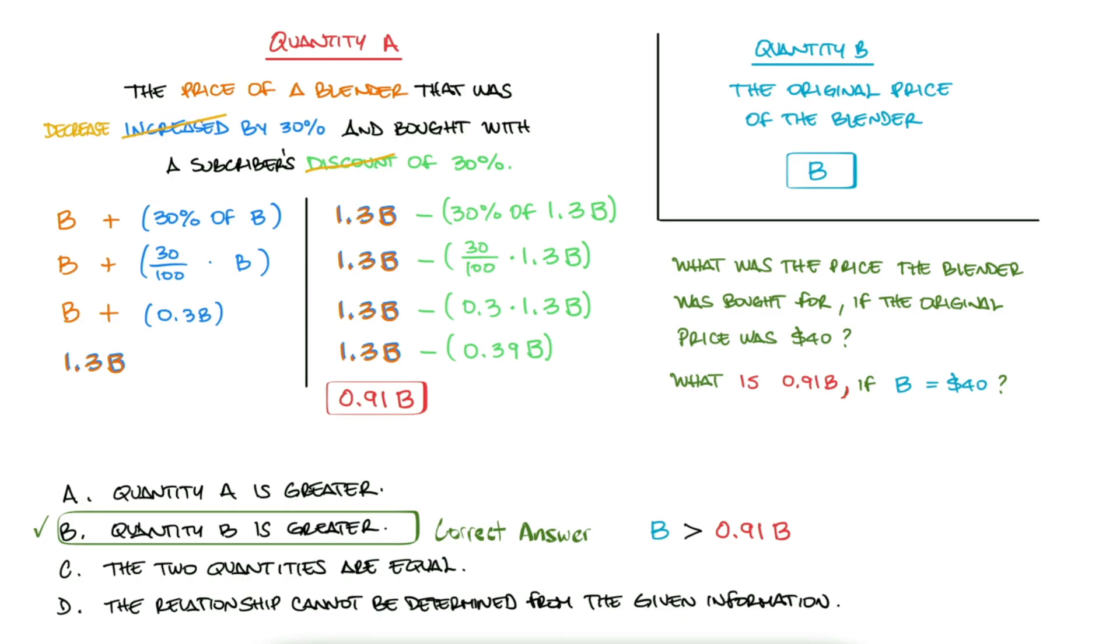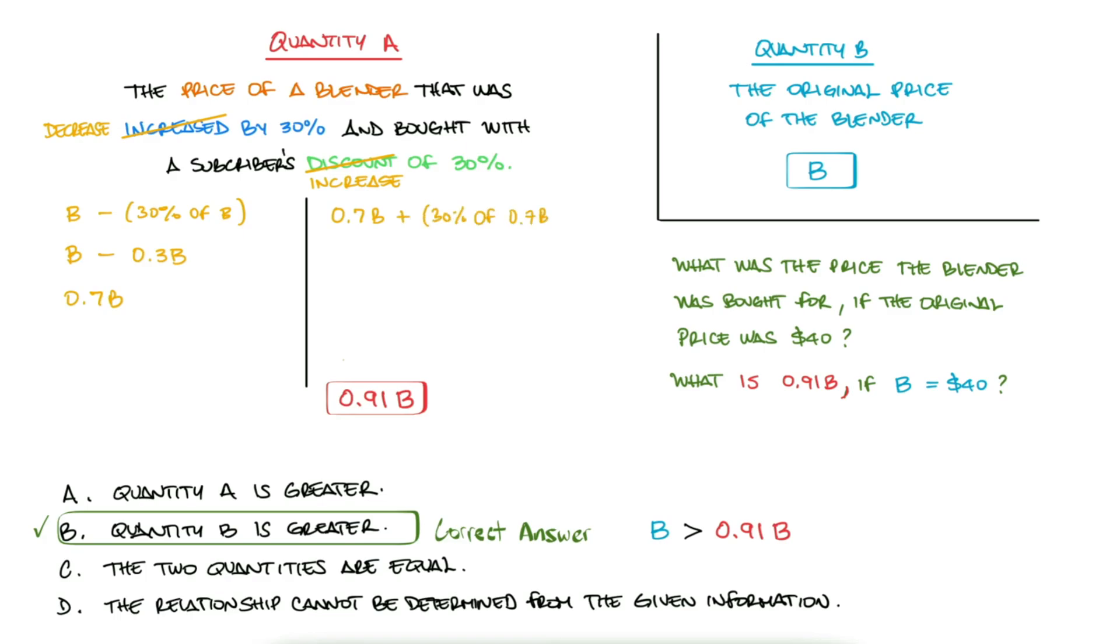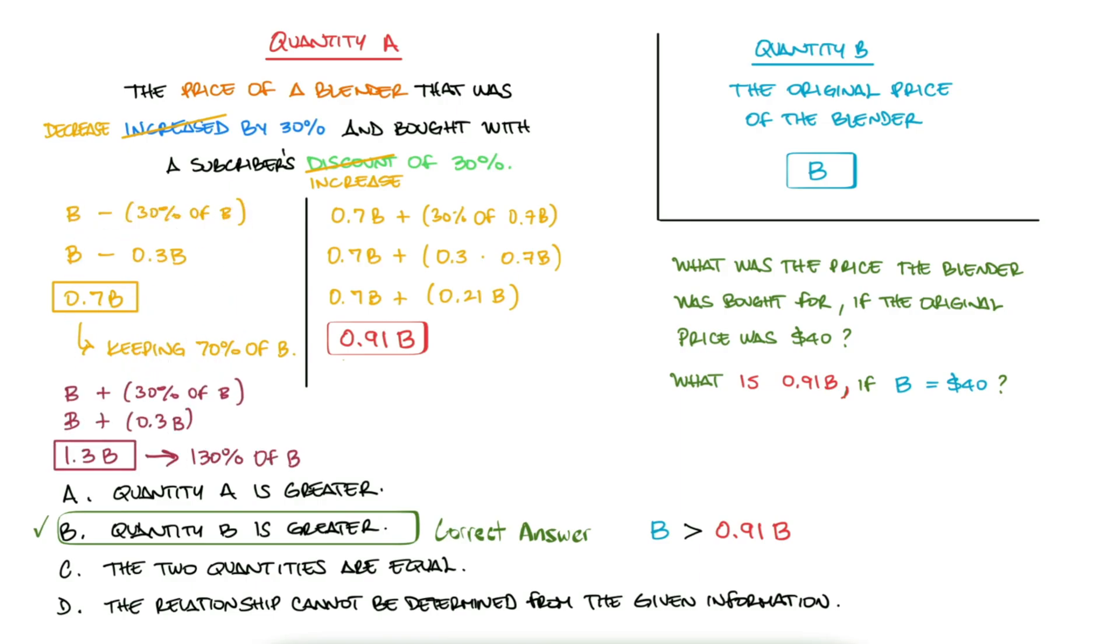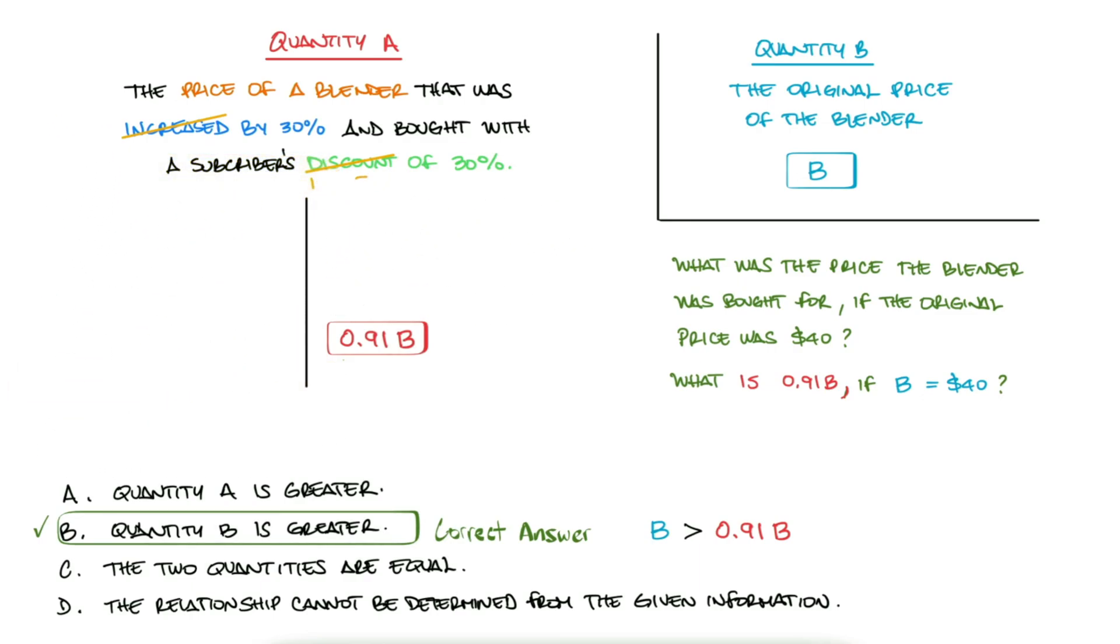A decrease of a percentage followed by an increase of the same percentage will always yield a value smaller than the original one. This is easily seen if instead of subtracting 30% of the price, we present it as keeping 70% of the price. Adding 30% is calculating 130% of a value, and subtracting 30% is calculating 70% of the value. So of course, 130% times 70% is not going to be 100%.